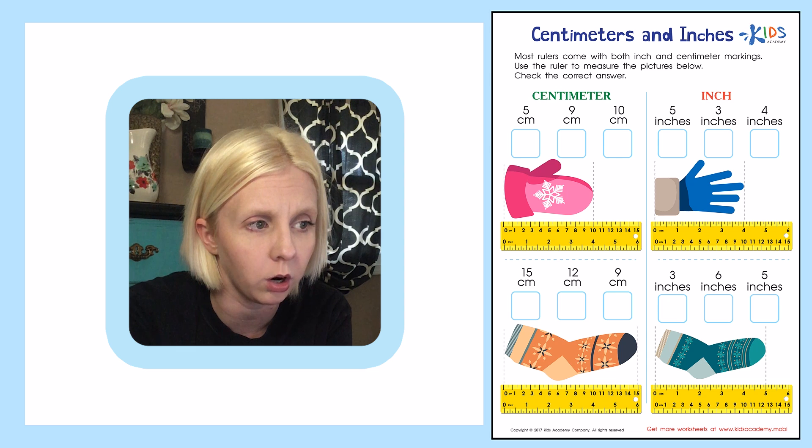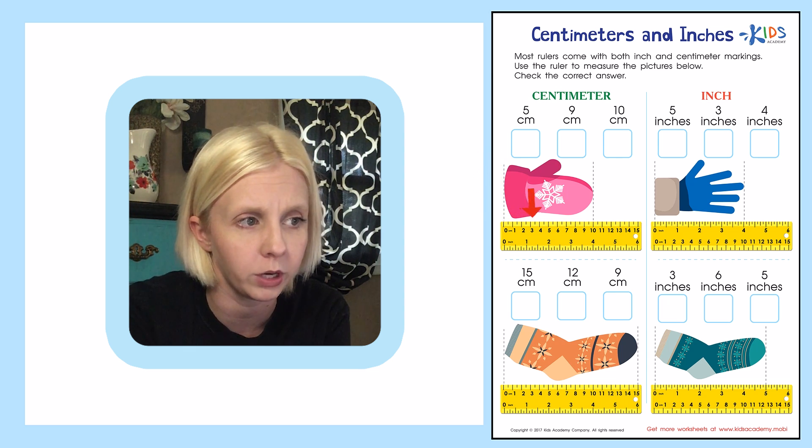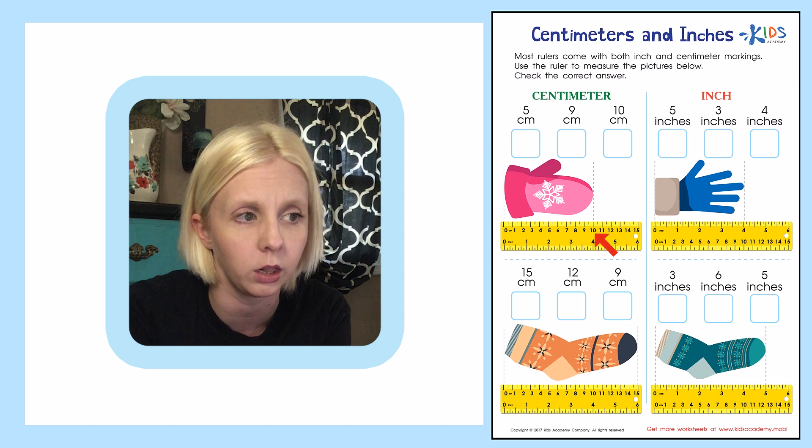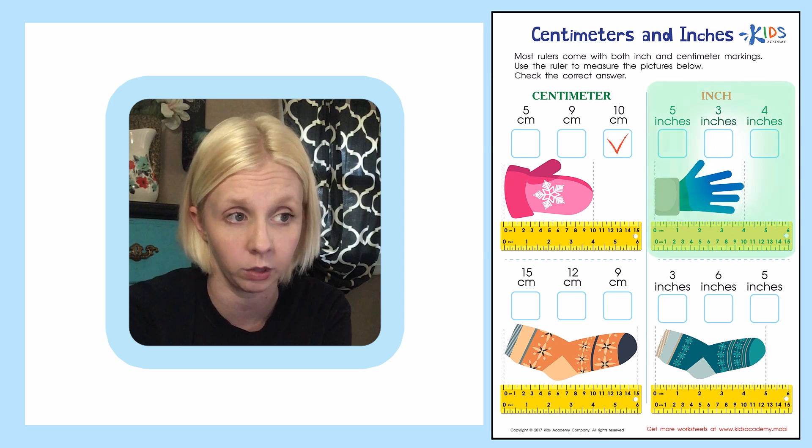So let's look at the glove. We're going to always start at the end of the ruler. We're going to measure it or line it up with the end of the ruler and then we're going to come down here and see where it stops. It comes right down here and they've drawn out this little dotted line for us to show us where it ends. And it looks like it's going to be right on the 10. So I'm going to check the correct answer. I'm going to put a check right here for 10 centimeters. Let's go on to the next one.